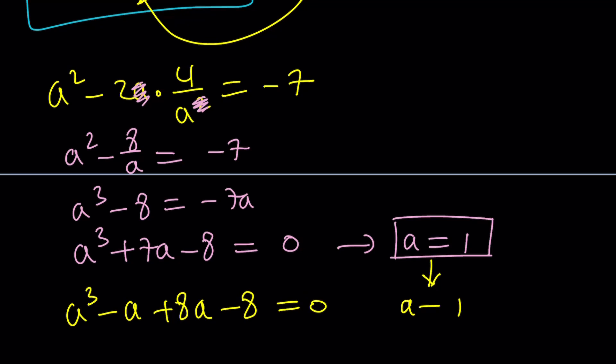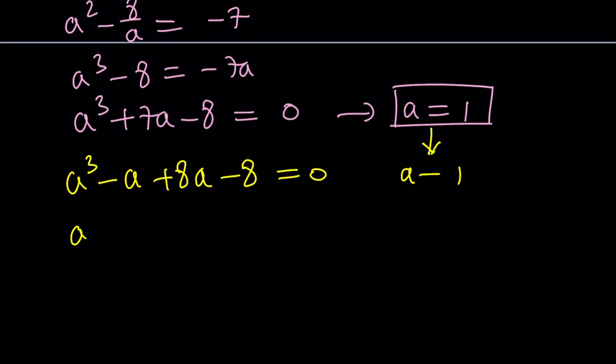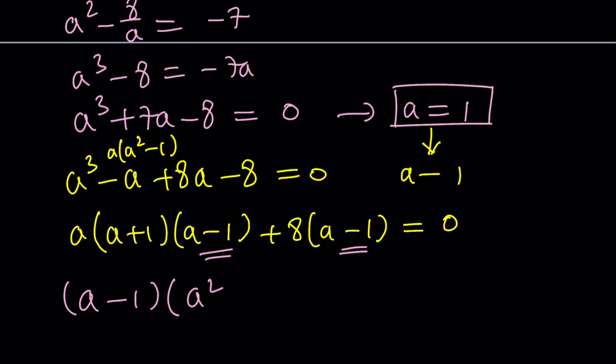And from here, we get a times a squared minus 1, which can be written as a plus 1 times a minus 1. I hope you recognize difference of two squares here. Of course, a minus 1 is supposed to be a common factor if we did it right. So now, a minus 1 can be factored out, and that should give us a times a plus 1, which is a squared plus a plus 8.